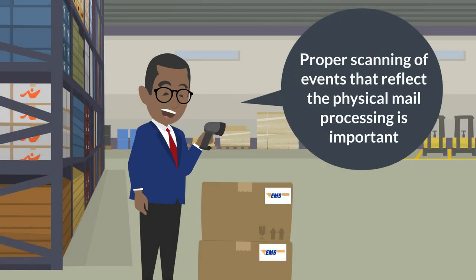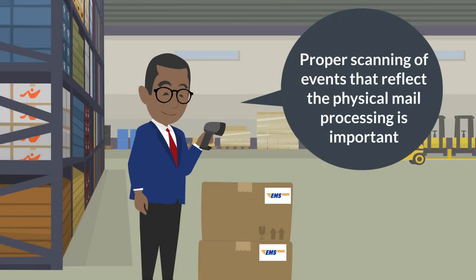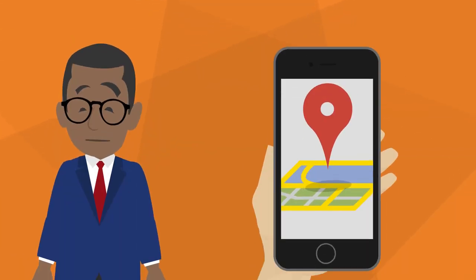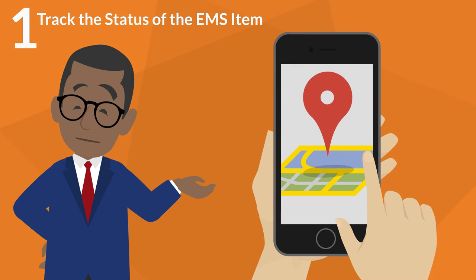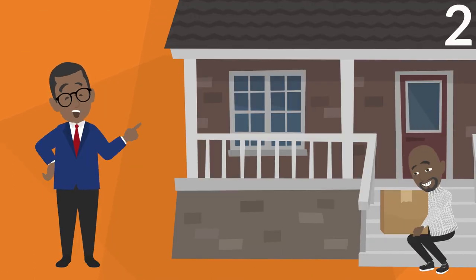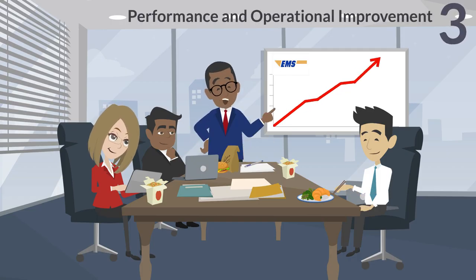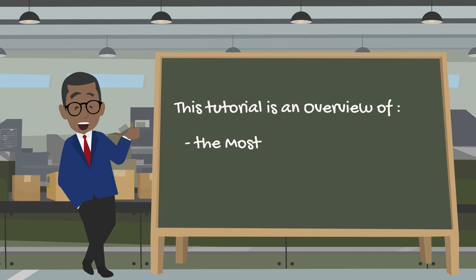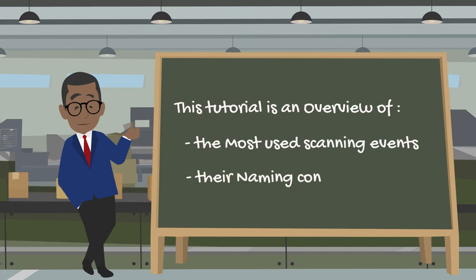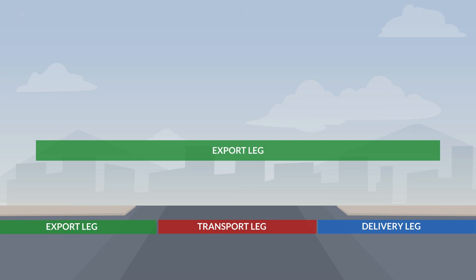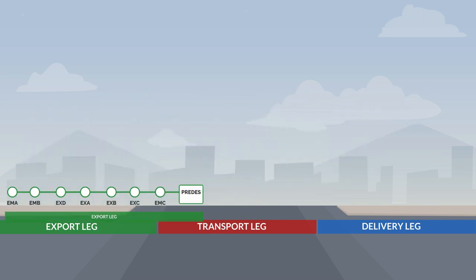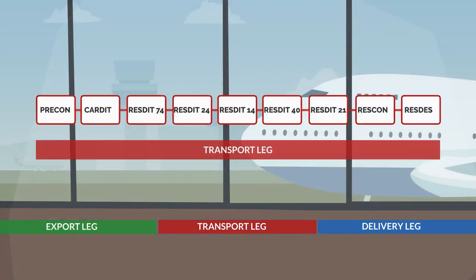The proper scanning of events that reflect the physical mail processing is important as it enables your customers to know the status of the EMS item in the tracking system, improves reliability and meets customer expectations, and helps posts measure performance and find room for operational improvement. In this tutorial, we will give an overview of the most used events and their naming conventions used on the pipeline journey in the export, transport, and delivery mail processing stages.